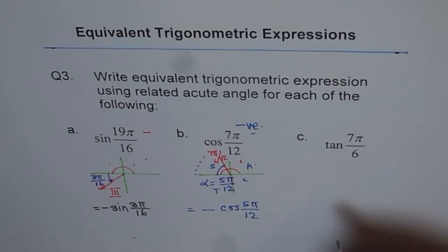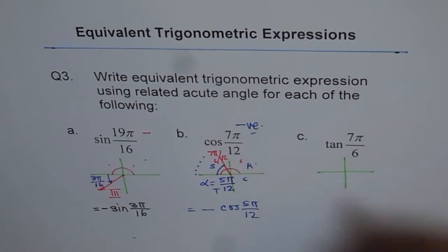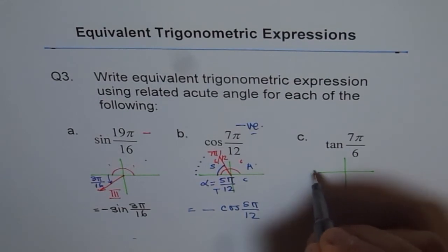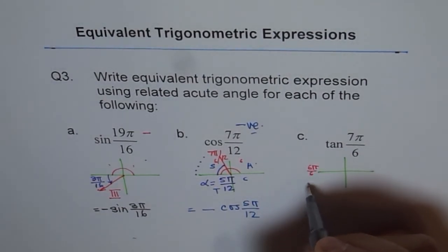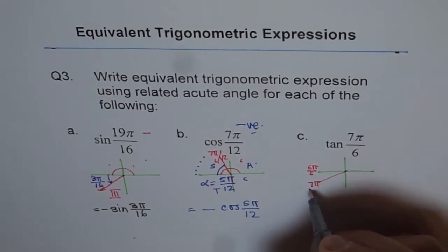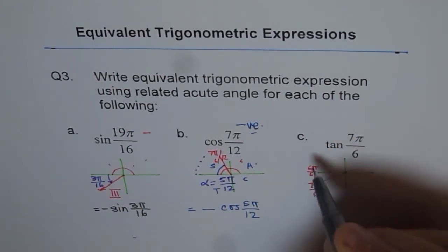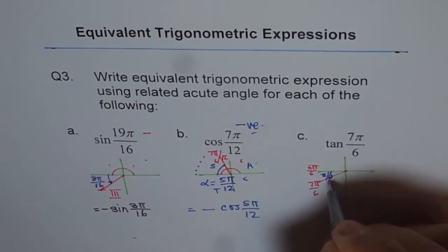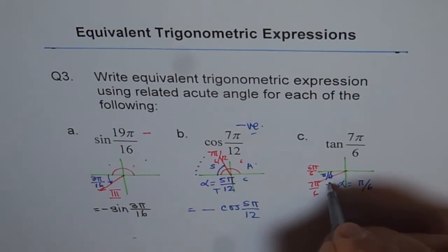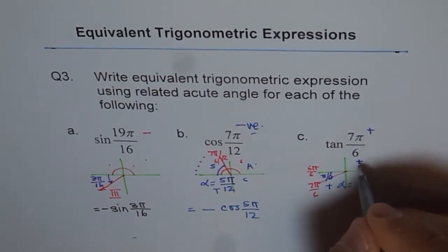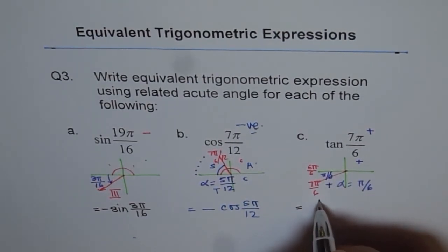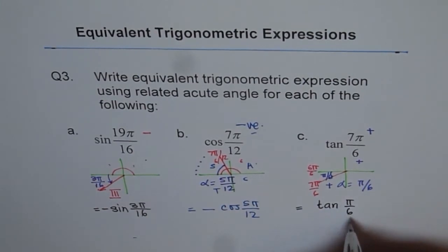One more and that is with tan. Tan is positive in coordinate 1 and 3. So what is 7π by 6? Where do we land? This π is divided into 6 portion. That means this is 6π by 6. Do you see that? This is another way of writing π. 7th is here. This is 7π by 6. So what is the related acute angle? It is π by 6. So alpha here is π by 6. Now tan is positive here. Tan is positive in quadrant 1 and in quadrant 3. And therefore we can write this as tan of π by 6. That's it.